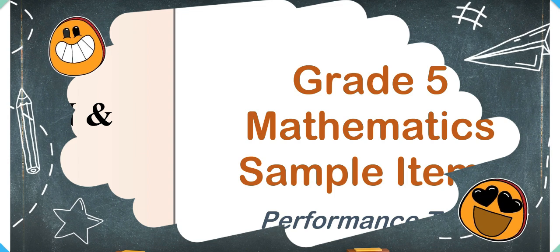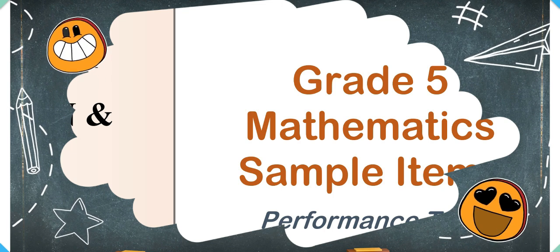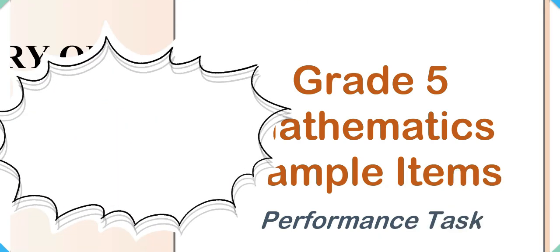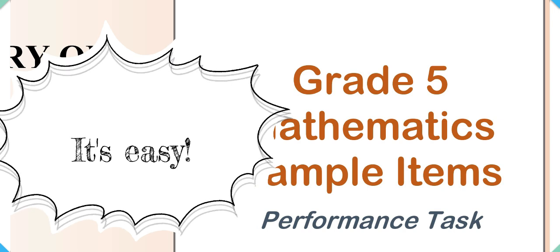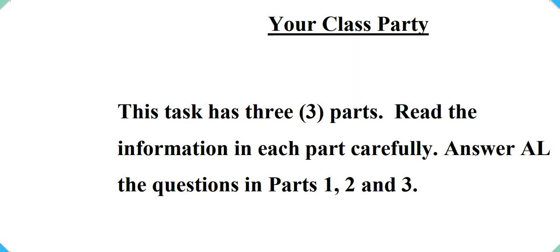Because from our experience that question has given a lot of children a big challenge, and the question is not that difficult once the question is cleared up. Students will have no problem following. So let's look at that question. All right, so here we have the performance task paper. The instructions: always read the instructions first. Your class party. This task has three parts. Read the information in each part carefully. Answer all the questions in parts one, two, and three.